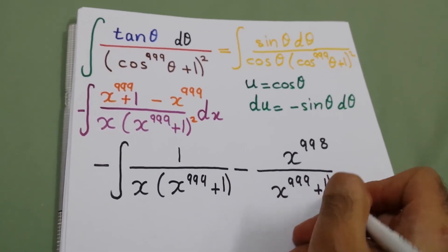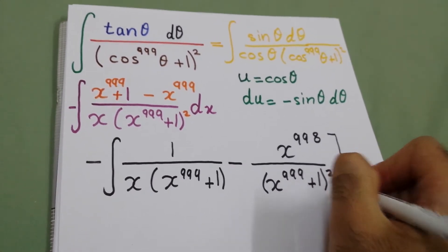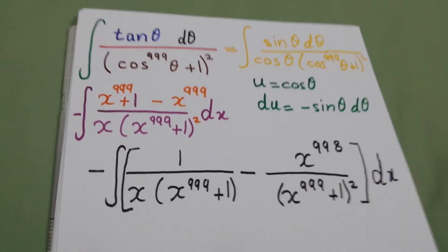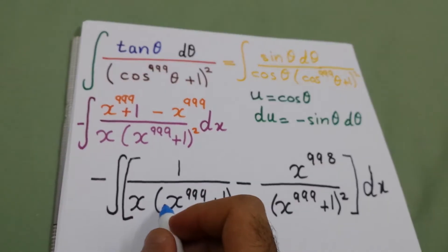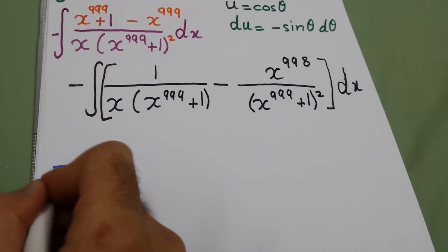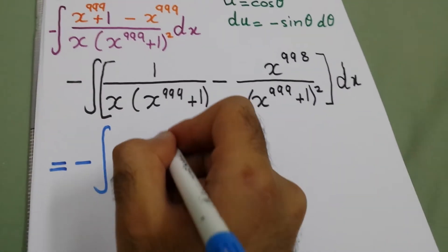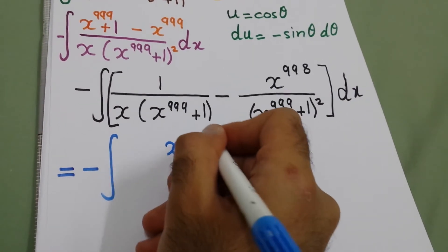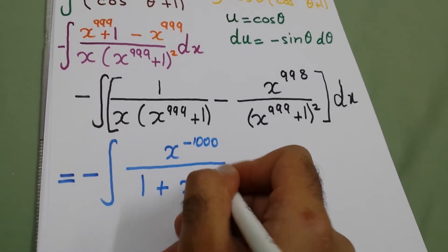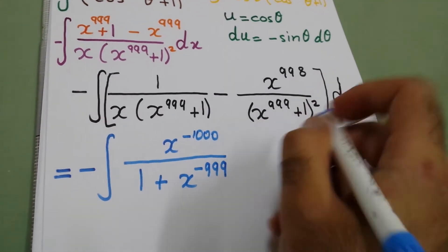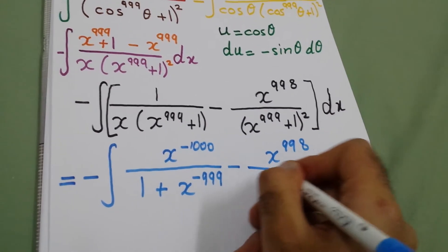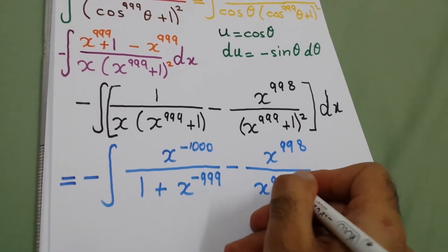We multiply both numerator and denominator by x to the power minus 1000, so it becomes minus the integral of x to the power minus 1000 over one plus x to the power minus 999, and here we keep x to the power 998 over x to the power 999 plus one, dx.